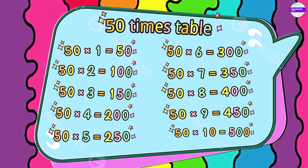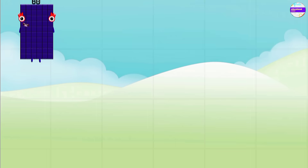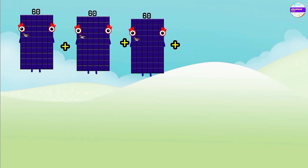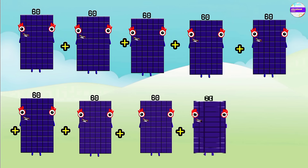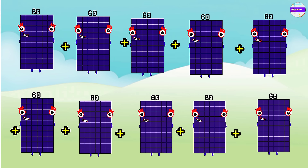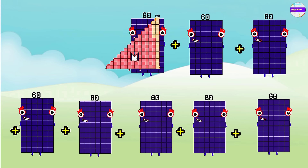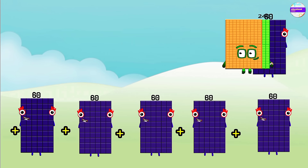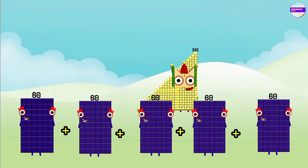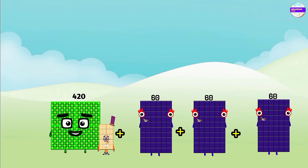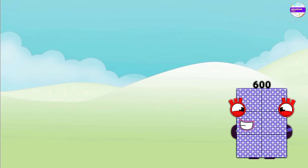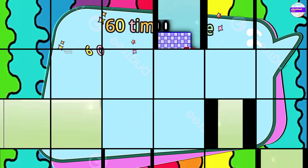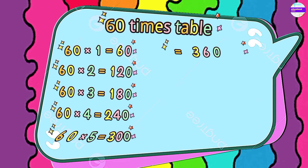Now let's do it with 60. 60 plus 60 plus 60 plus 60 plus 60 plus 60 plus 60 plus 60 plus 60 plus 60. 60 plus 60 is 120, 180, 240, 300, 360, and the last one is 600. This is the 60 times table.